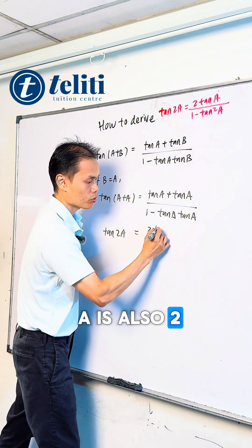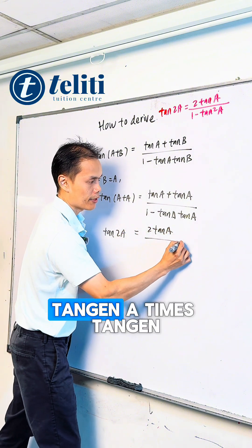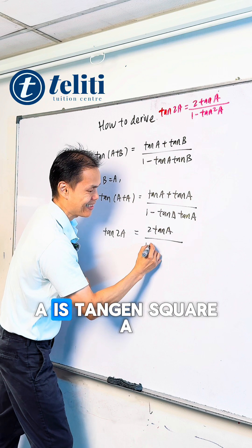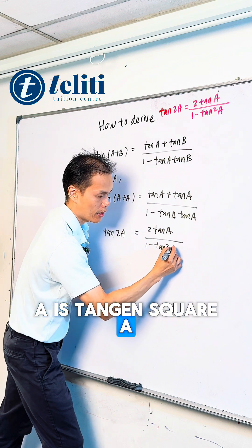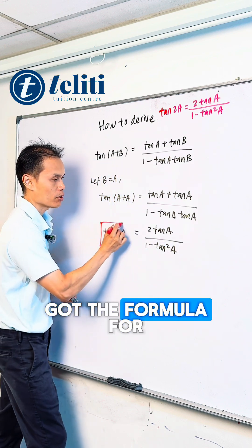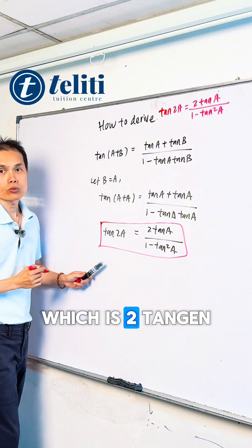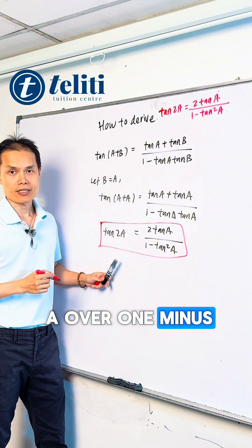Tangent A plus tangent A is 2 tangent A. Tangent A times tangent A is tangent square A. There you go. You got the formula for tangent 2A, which is 2 tangent A over 1 minus tangent square A.